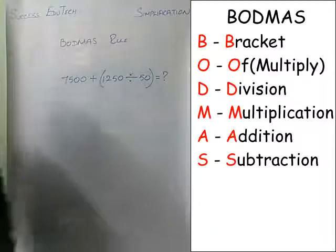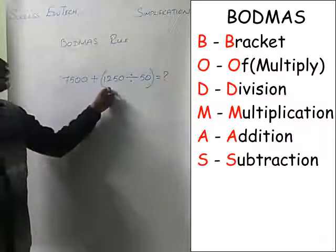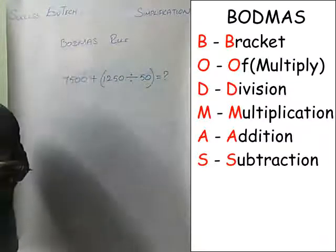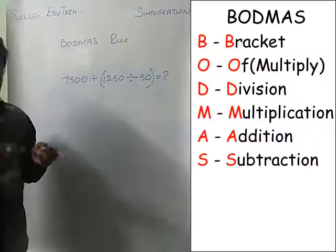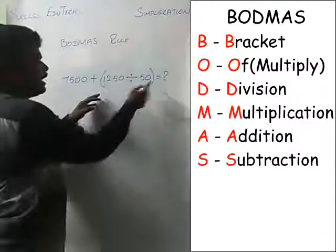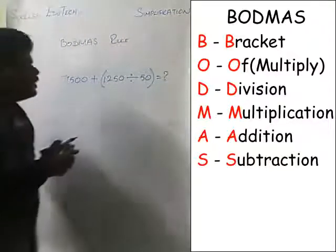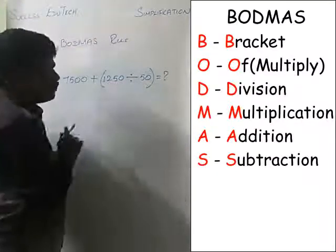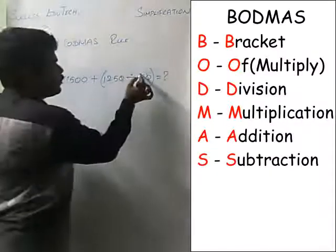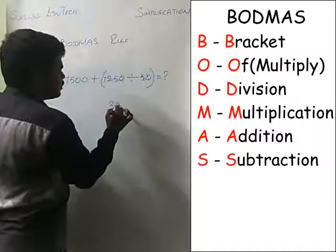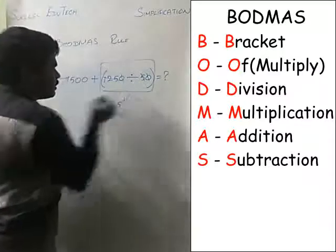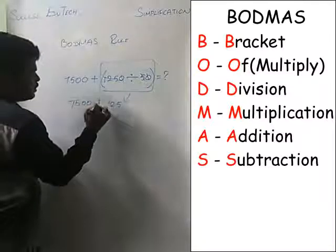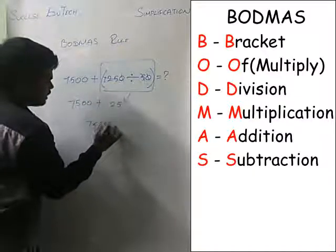Here is another question: 7500 plus (1250 divided by 50). By the BODMAS rule, do the operation in the bracket first. Divide 1250 by 50 — cancel the zeros and divide by 5 to get 25. Then add it to 7500 to get 7525 as the final answer.